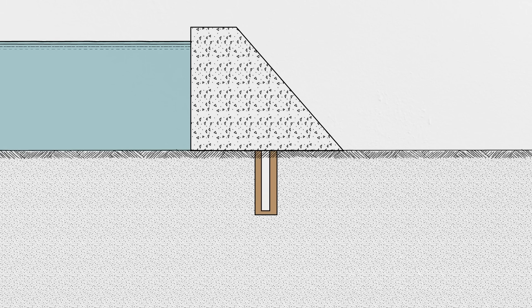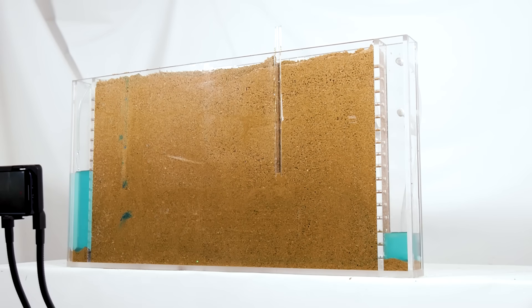The other way to deal with seepage and uplift pressure are drains. Drains installed below a dam do two important jobs. First, they filter seepage using sand and gravel so that soil particles can't be piped out from the foundation. Second, they relieve uplift pressure by removing the water. Let's see how this works in my model.